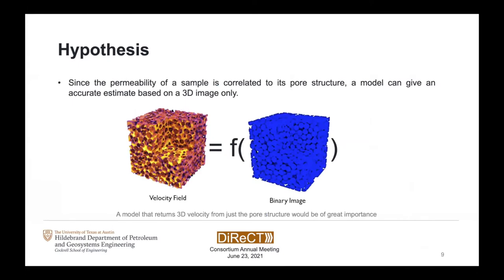Our hypothesis is that since the permeability of the sample is correlated to its pore structure, a model should be able to give an accurate estimate based on the 3D image only. I hypothesize — and this might be a little controversial — that the sample structure versus permeability relationship is a smooth, continuous, monolithic manifold where all our solutions live. Parting from this assumption, our task is to craft a neural network that is able to parameterize the regions of interest of this hypothetical manifold.